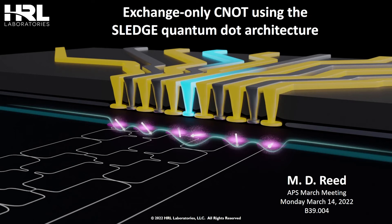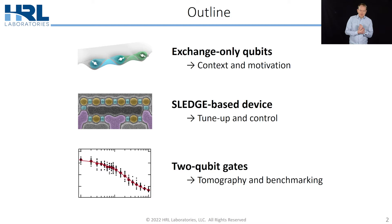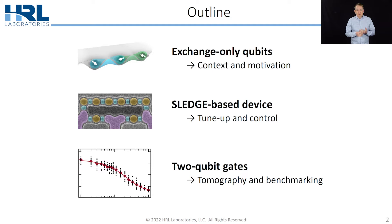Hi, I'm Matt Reed from HRL, and I'm going to be talking about our recent result of demonstrating an exchange-only CNOT using the SLEDGE qubit architecture. The rough outline of my talk: the first third covers exchange-only qubits and why we're interested in them; the next third discusses the specific device we're using, how we tune it up and control it; and finally, I'll show the actual two-qubit gate result.